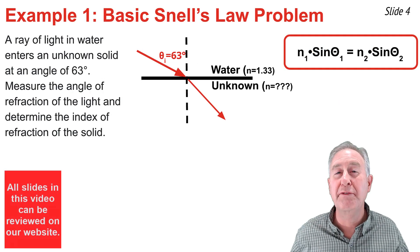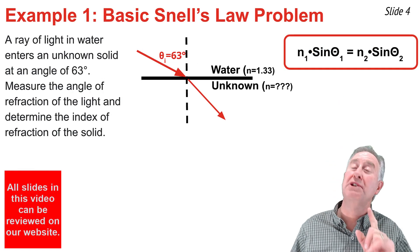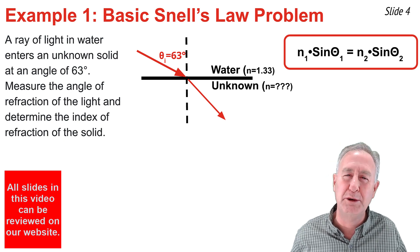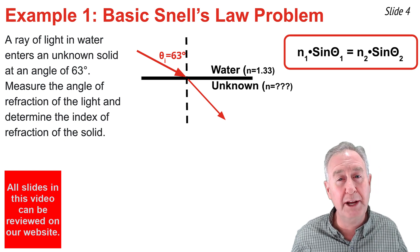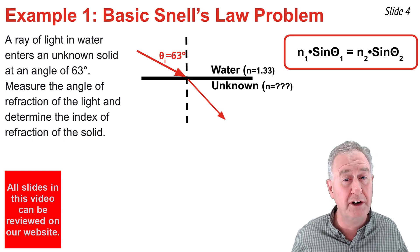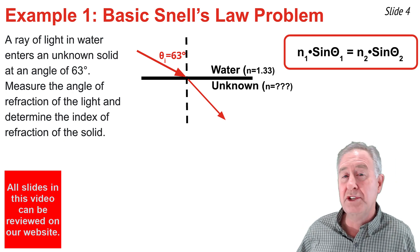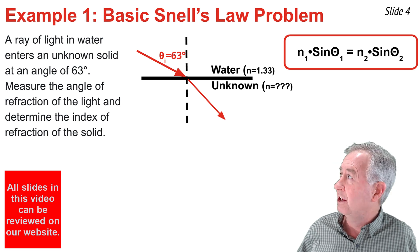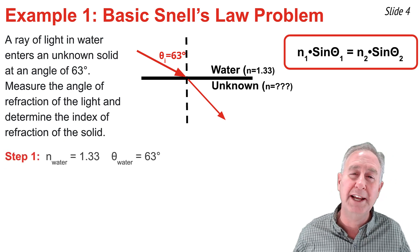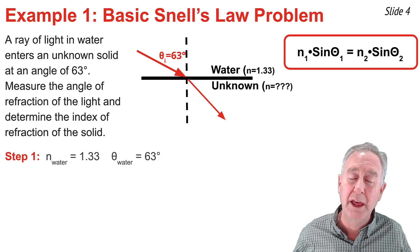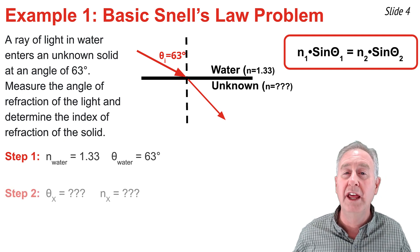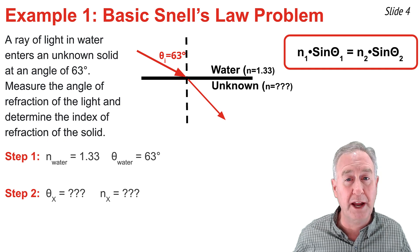In the first of four example problems, I'll be using the Snell's Law equation to calculate the index of refraction of an unknown material. I am told that the light ray is in water approaching the boundary with the unknown material, the angle of incidence is 63 degrees, and the index of refraction of water is 1.33. I am asked to measure the angle of refraction in the unknown material and to calculate its index of refraction.